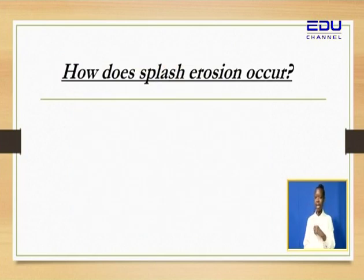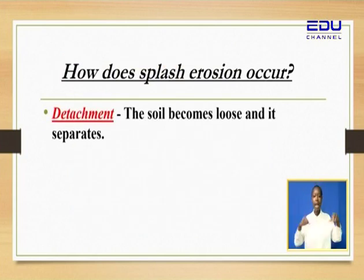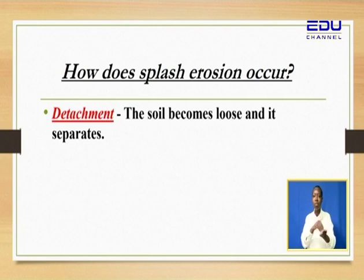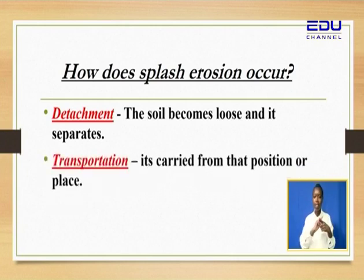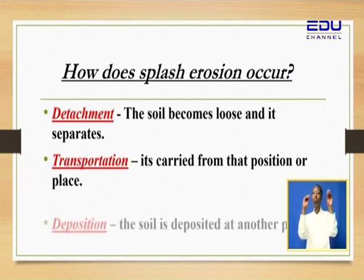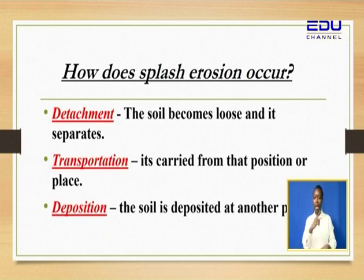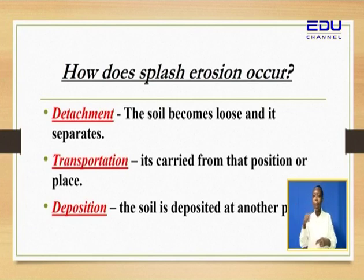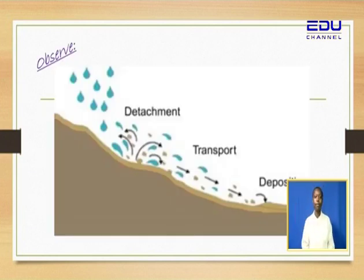We have identified splash erosion and said it occurs due to three processes. Detachment — the soil becomes loose and it separates. Transportation — it's carried from that position or place to somewhere else, from point A to point B. And deposition — the soil is deposited at another place, the deposition site. The next diagram shows the processes happening from the higher ground to the lower ground.